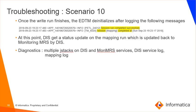Once the writer run finishes, EDTM de-initializes after logging the relevant messages. At this point, the DIS service gets a status update from the PMDTM SVC2 process, which is updated back to the monitoring MRS by DIS. If the mapping log on the server shows the mapping is successfully completed but the status in monitoring still shows running, collect Jstacks on DIS and monitoring MRS to verify why the status of the mapping is not updated. These are the various scenarios where performance could degrade and, as mentioned, the associated diagnostics need to be collected to troubleshoot the respective phase.